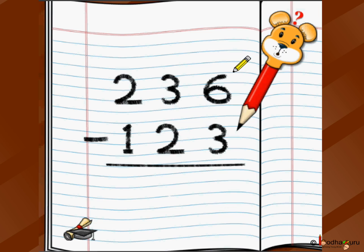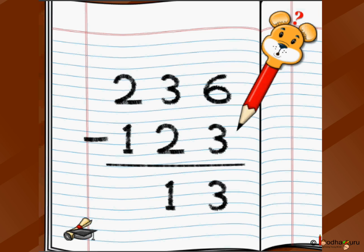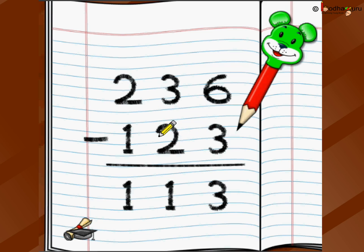Let's go: 6 minus 3 is 3. Move to the next position — 3 minus 2 is 1. Then 2 minus 1 is 1. The answer is 113. You had 236 chocolates, removed 123, and you still have 113 chocolates after the birthday party — you can keep eating with your family every day!